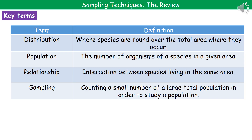The population is the number of organisms of a given species within that area. A relationship is an interaction between species in the same area. And finally, sampling is about counting a small number of the total population so that we can study it — rather than counting every single individual in a large population, we just count a small number to give us an idea about the total population.